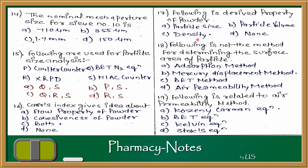Question 18: Which of the following is NOT a method for determining surface area? Methods for surface area determination include adsorption method and air permeability method with Kozeny-Carman equation. However, mercury displacement method is used for density measurement. The answer is B — mercury displacement method is not used for determining surface area.